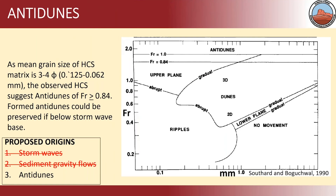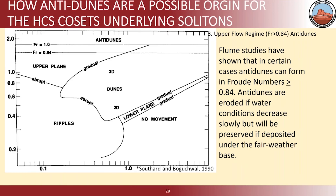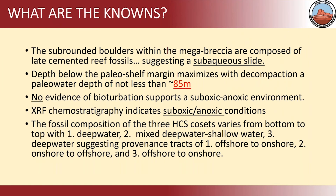So we're going to say that these are anti-dunes. The Froude number at 0.84 will give you the anti-dune stage. The zones with the boulders are sub-aqueous mega-breccia, a subaqueous slide. The depth above the Cleo shelf is not less than 85 meters because of the anoxia and our fossils. No evidence of bioturbation supports a suboxic to anoxic environment, and XRF chemistry indicates those conditions are consistent.